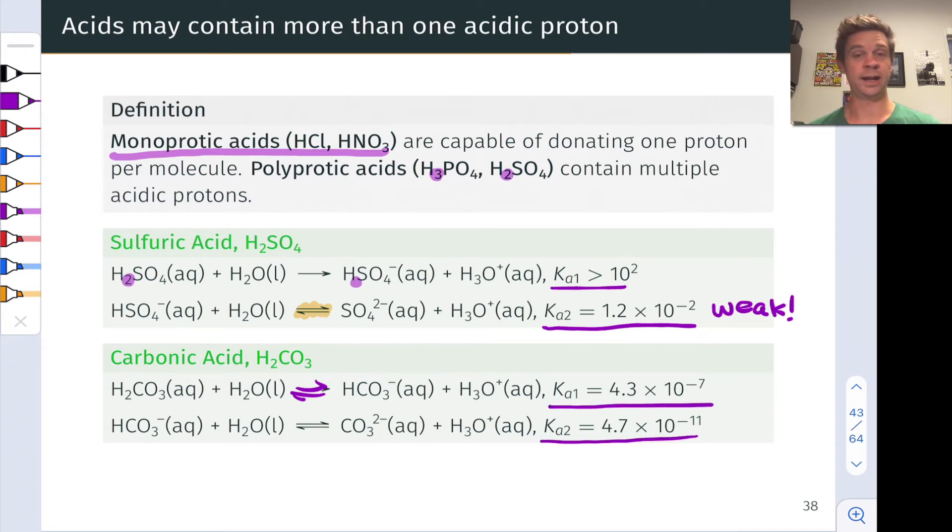We've seen that Ka tends to get much smaller with each proton we lose. And notice the nomenclature associated with Ka. Loss of the first proton, typically from the neutral polyprotic acid with all of its protons intact, is called Ka1.